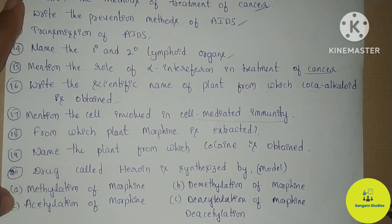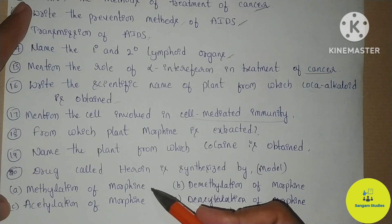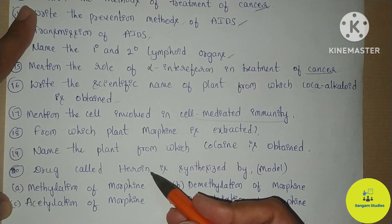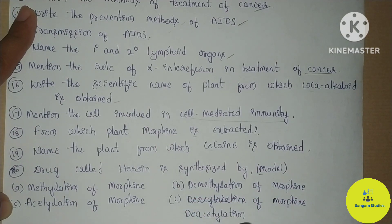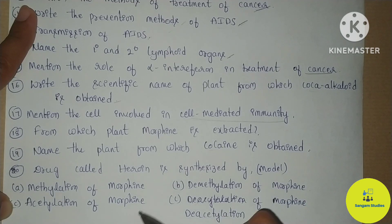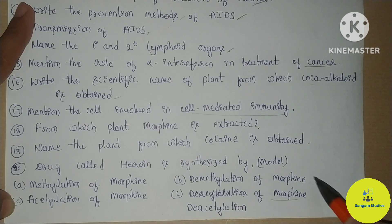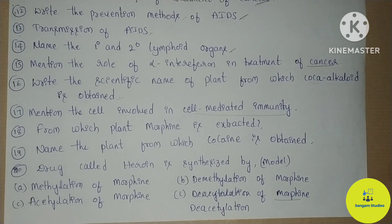In this video, you can use MCQ. Heroin synthesis involves: acetylation of morphine, methylation of morphine, demethylation of morphine, or deacetylation of morphine. These are the four options — you can use this MCQ in this video.